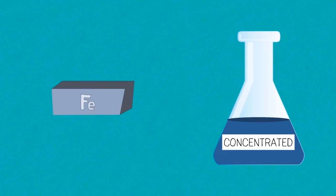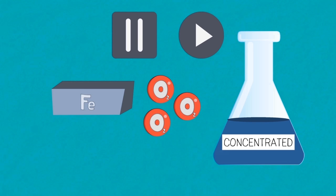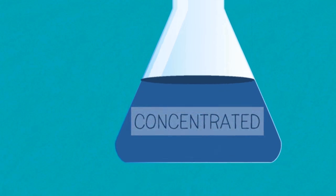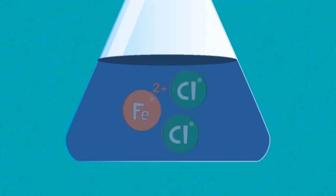What do you think happens when iron reacts with concentrated acids or if there is oxygen present? Pause, think and continue when you are ready. The correct answer is that the iron is oxidized from Fe2+ to Fe3+.